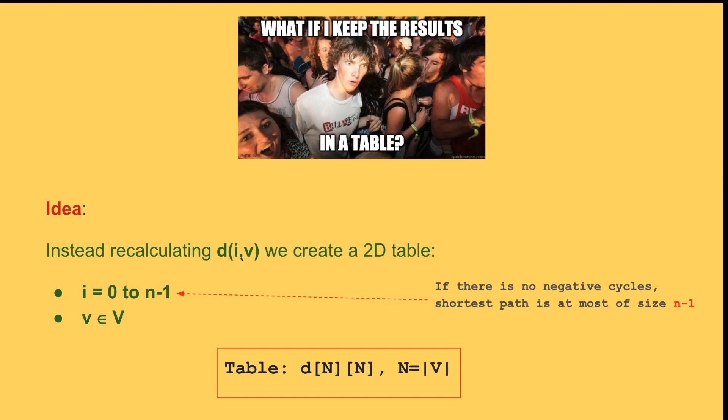So this 2D table for i and v, i changes from 0 to n minus 1. I leave this as a homework why we only need to change i from 0 to n minus 1. And then v only changes for all the nodes in the graph. If you have n nodes in the graph, the table would be n by n, n being the size of the nodes in your graph.